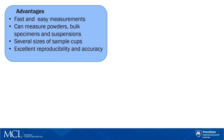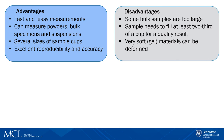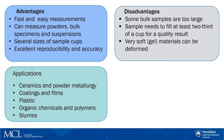To summarize, helium pycnometry provides easy and fast measurements. We can measure samples in different states and sizes, and this method gives excellent reproducibility and accuracy. However, there are a few disadvantages. Some bulk specimens can be too large to fit into the sample cup. Samples need to fill at least two-thirds of the cup for quality results, and this could be a problem if you have very little sample. Also, very soft gel-like materials can be deformed by the introduced helium pressure. Applications include ceramics and powder metallurgy, coatings and films, plastics, organic chemicals and polymers, and slurries.